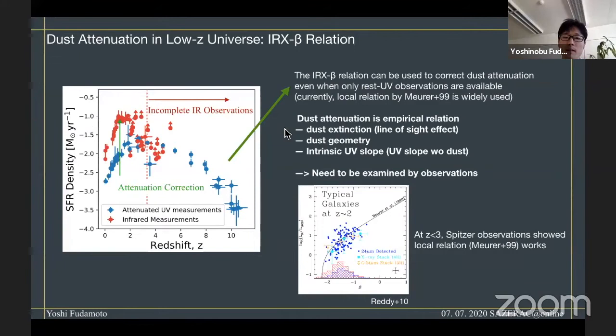However, one potential problem is that this dust attenuation is highly empirical variation. For instance, dust attenuation is dependent on dust extinction law, line-of-sight effect of dust, stellar-to-dust geometry, and the intrinsic UV slope from which we observe the reddening of the UV spectral slope. Because of these dependencies, the IRX-beta relationship or dust attenuation relation should be examined and confirmed by observations directly.